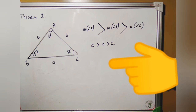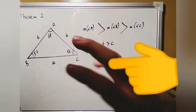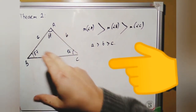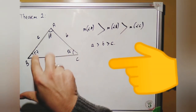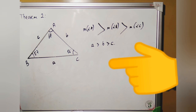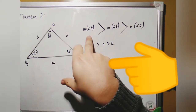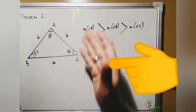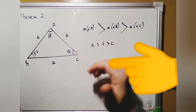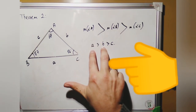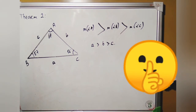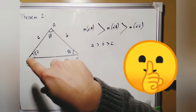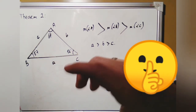In Theorem 2, there is a relationship between interior angles and sides of a triangle. Looking at triangle ABC with angle A = 67°, angle B = 57°, and angle C = 56°, the biggest angle is A, then B, then C. So side a is greater than side b, which is greater than side c. In summary: if one angle of a triangle is larger than another, the side opposite the larger angle is longer than the side opposite the smaller angle, and vice versa.